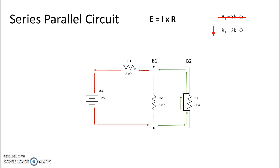Our resistance has gone down — a perfect chance to look at the Ohm's Law arrow theory. We know that our applied voltage has not changed, so if resistance is going down, we can determine that current must be going up. We did have 4 milliamps of current, and that has changed. Now we have 12 volts divided by R1 which is 2,000 ohms, giving us a new current of 6 milliamps.